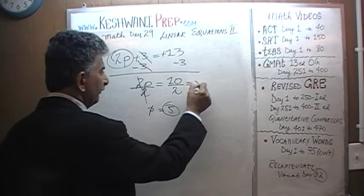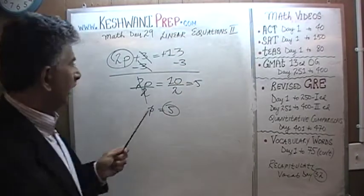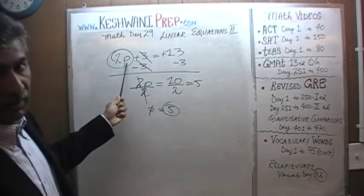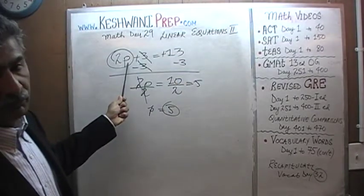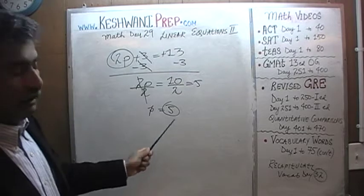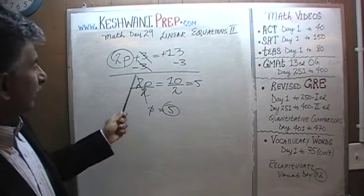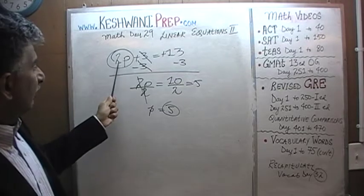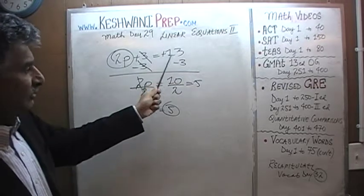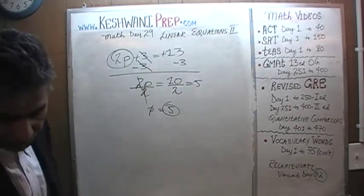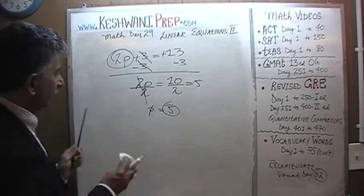2 is going to cancel out and P turns out is 5. 10 divided by 2 is 5. And we can quickly put it back in here to see if this answer is correct. 2 times 5 is 10. 10 plus 3 is 13, which is exactly what we have there. Let's do the next one.